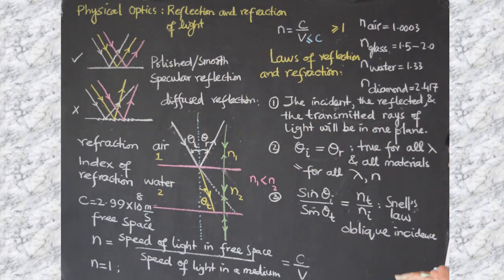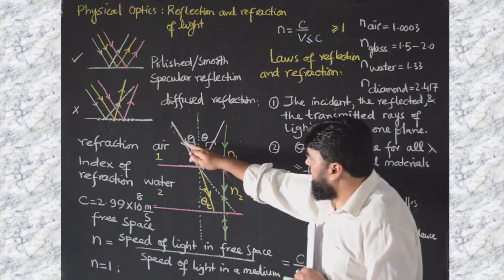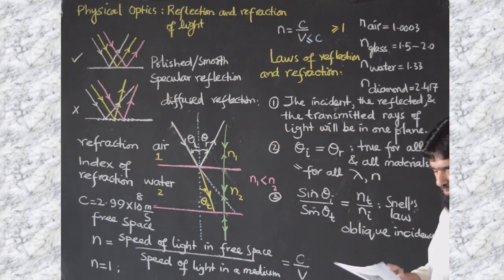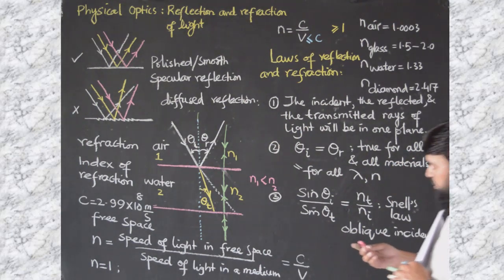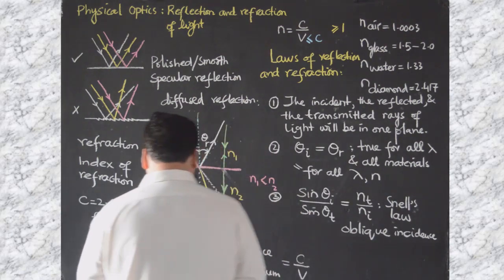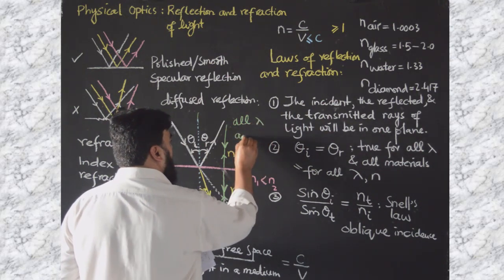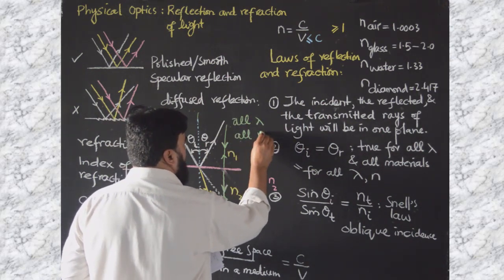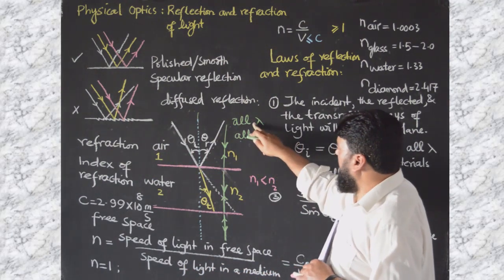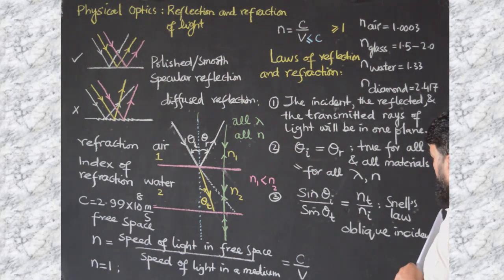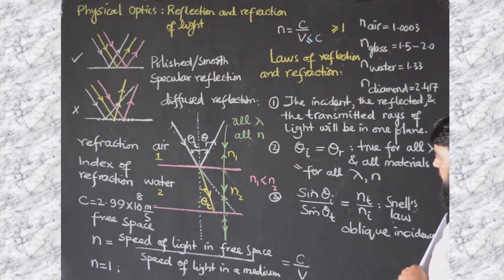For oblique incidence, the ray bends according to Snell's law, and this is true for all wavelengths and all materials. Now there are many applications of reflection, and we will discuss those applications one by one.